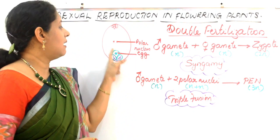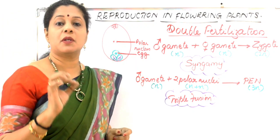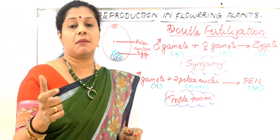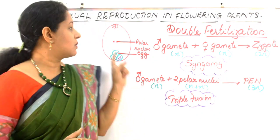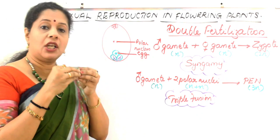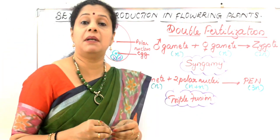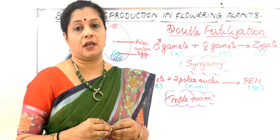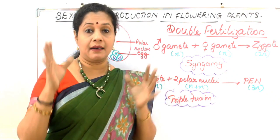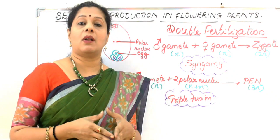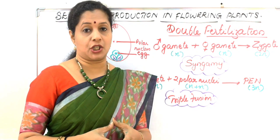This cell becomes the primary endosperm cell — the central cell is becoming the primary endosperm cell. Since three nuclei are fusing, this fusion is called triple fusion. So since syngamy and triple fusion are both happening, we call it double fertilization.